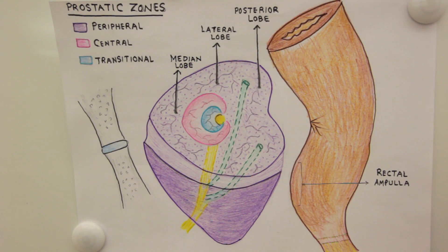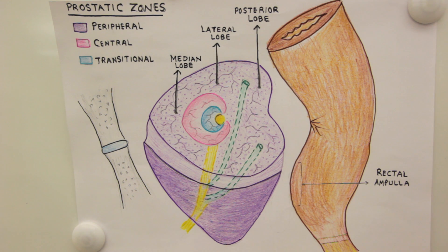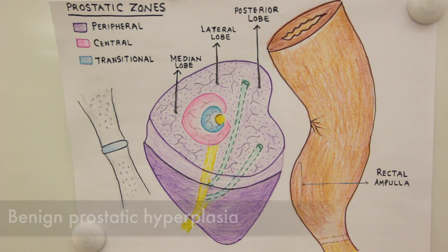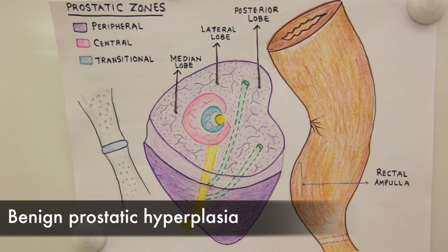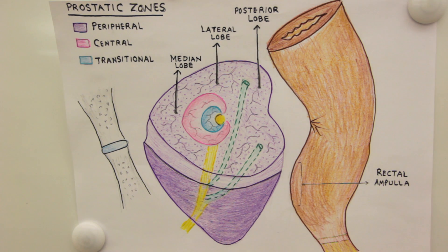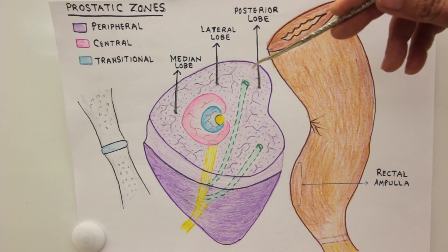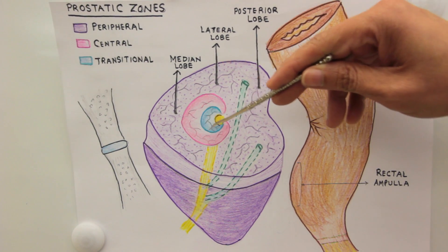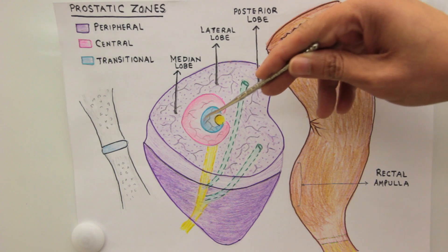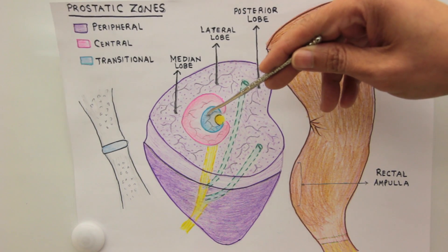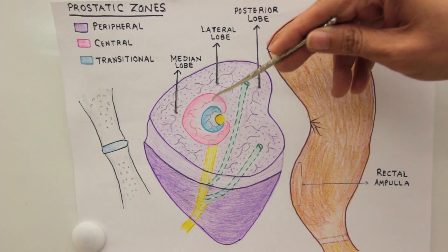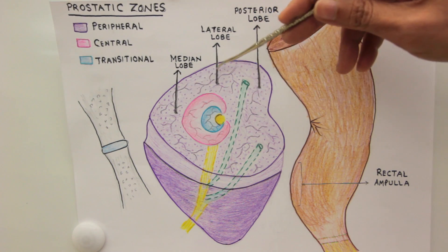Before moving on to other illustrations and specimens, a few clinical considerations. There is a condition most common in middle-aged to old men: BPH, benign prostatic hyperplasia. That is the hyperplasia of glandular tissue present usually in the periurethral zone or transitional zone, and it can involve the median lobe as well as the lateral lobes.